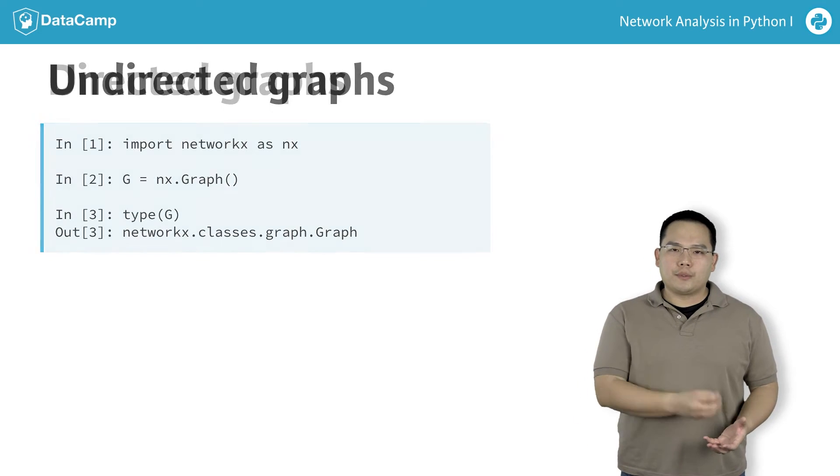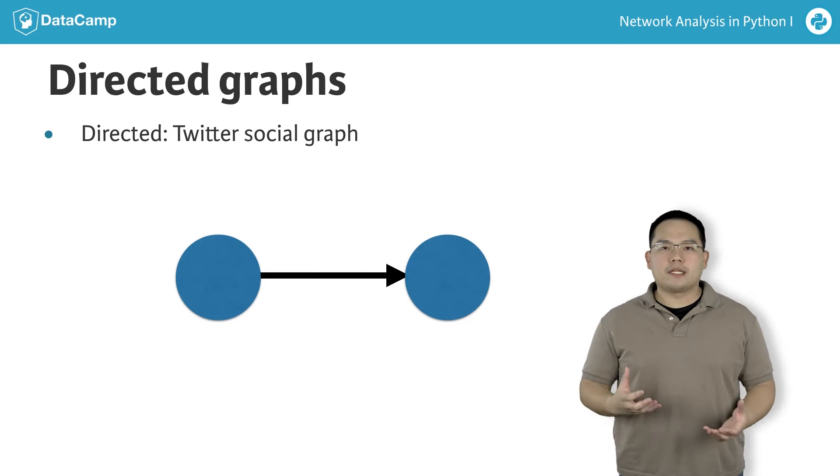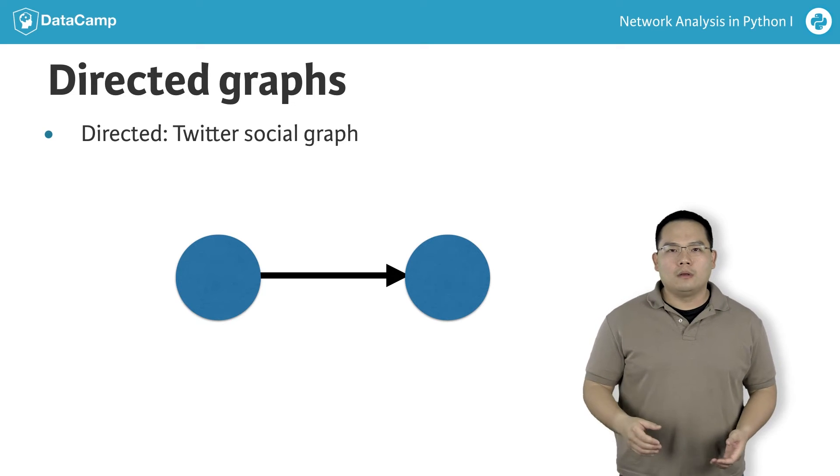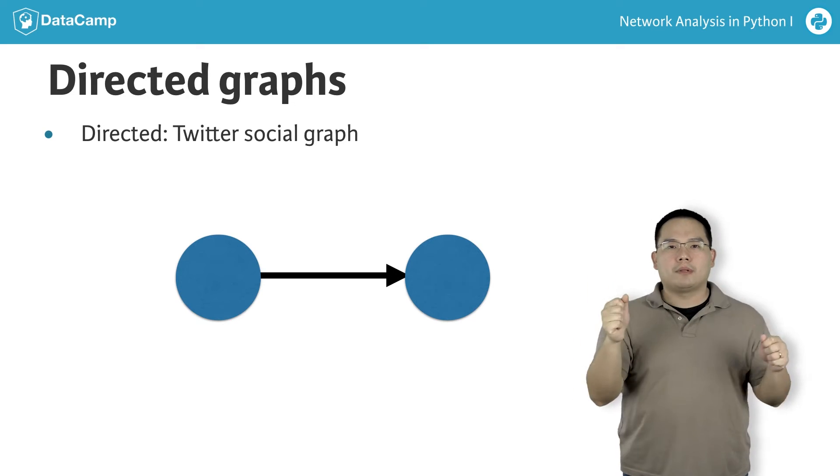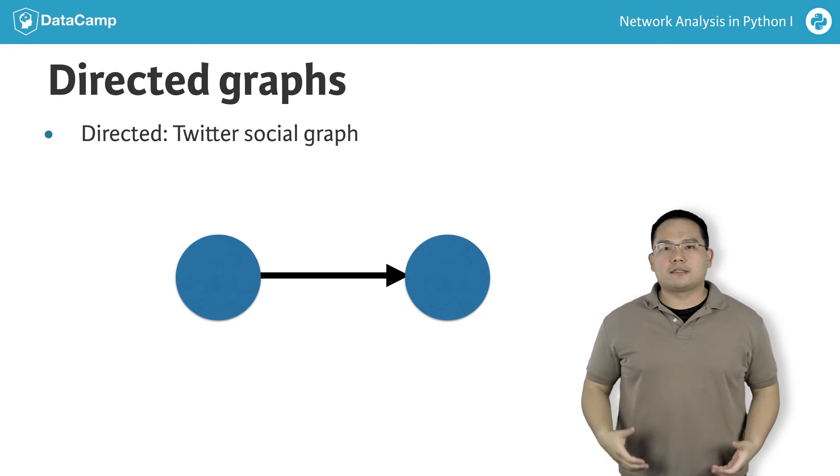On the other hand, Twitter's social graph is a directed network. This is because of the nature of how users interact with one another. For example, one user may follow another user, but that other user may not follow back. As such, there is an inherent directionality associated with the graph.